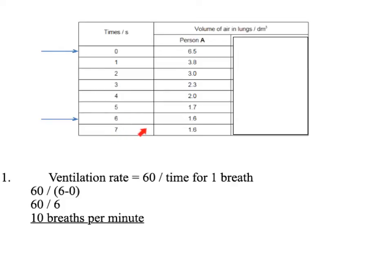We've not gone all the way to seven because you can see the person has stopped breathing out at this point, as the volume does not change between those two. So the person has breathed out for six seconds. So it would be 60 divided by six, which gives ten breaths per minute.